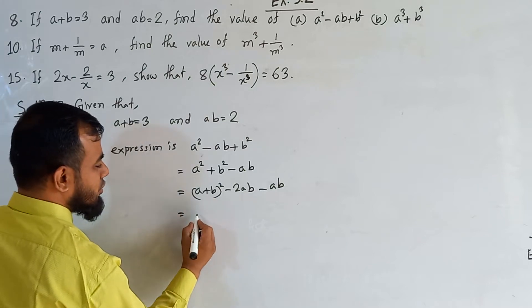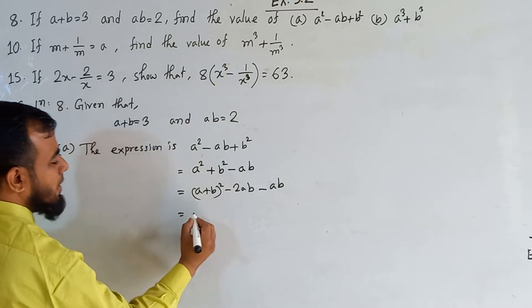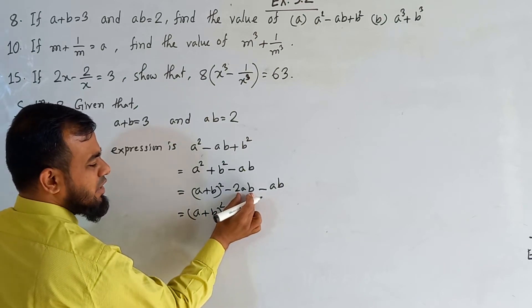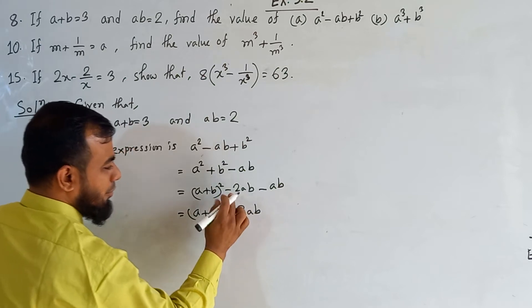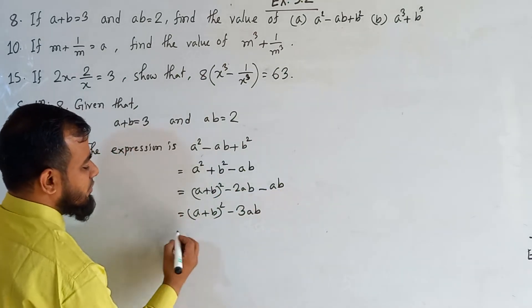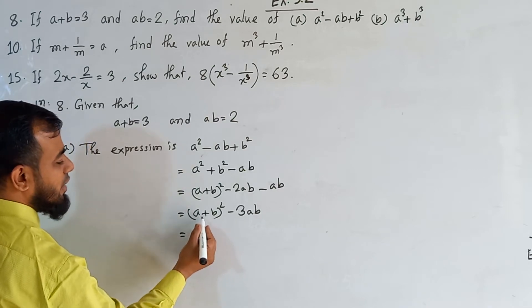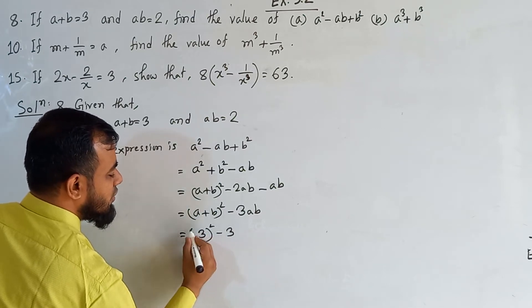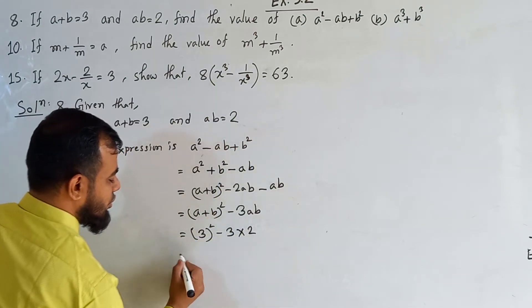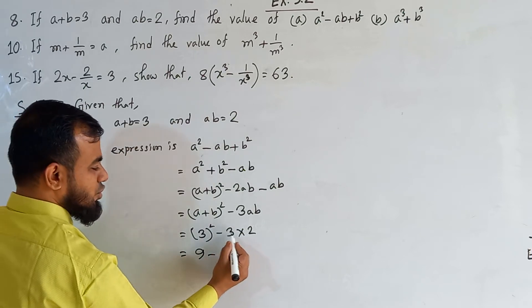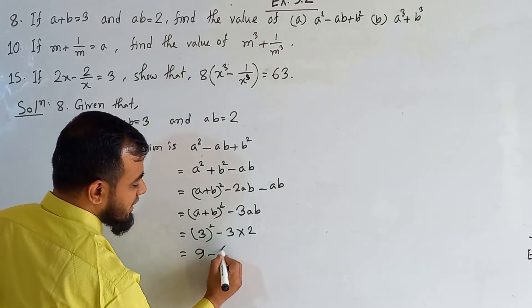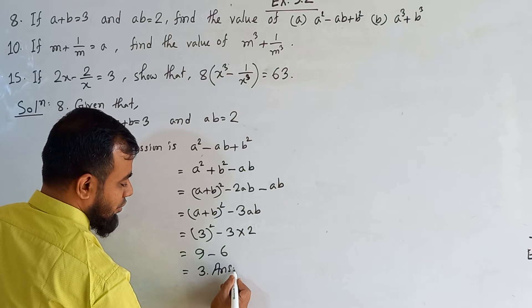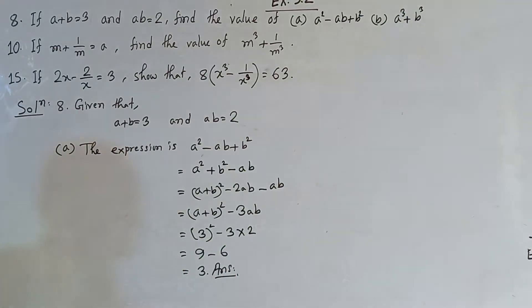Now look, my dear students — A plus B whole squared value is 3. So I can put the value in the next line: A plus B whole squared minus twice AB, minus AB — that makes minus thrice AB. Now putting the values: 3 squared minus 3 into AB's value 2. So 3 squared means 9, minus 3 multiplied by 2 is 6. It is now 9 minus 6 equal to 3, which is our required value of sub-question A of question number 8.